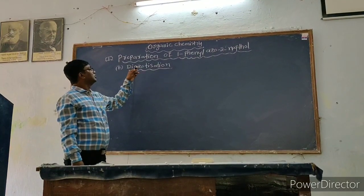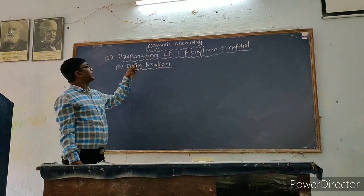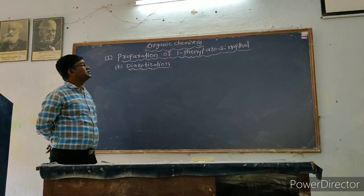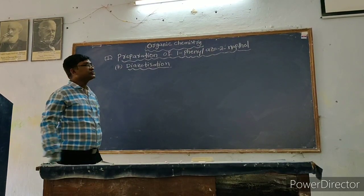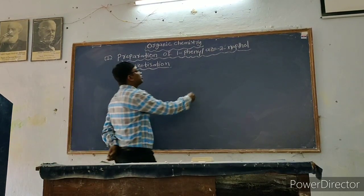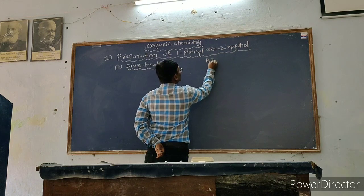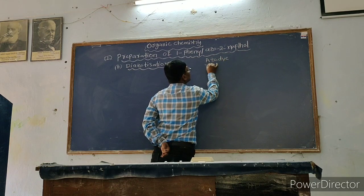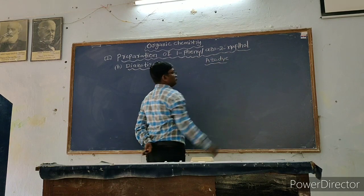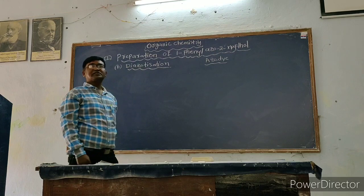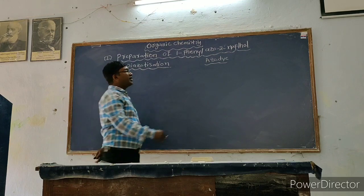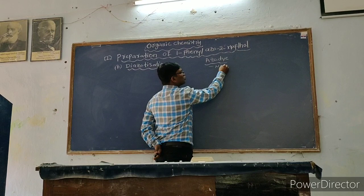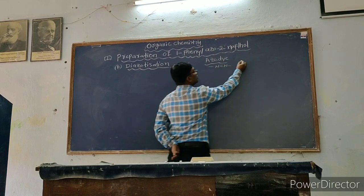Now we try to learn the vibration of the 1-phenyl azo 2-naphthol. It comes after the azo category — azo dye. Dye means a colored compound. Azo dyes contain a diazo group in them. Azote means nitrogen gas.